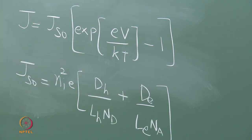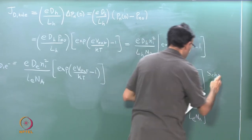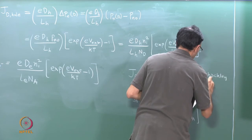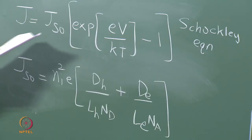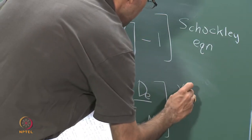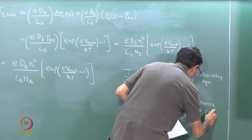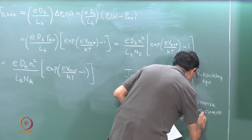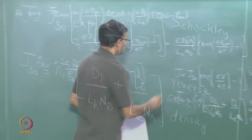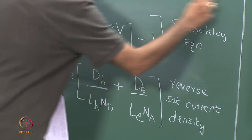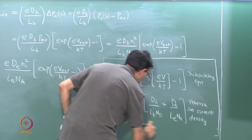This equation is called the Shockley equation. The constant term J_s0 is called the reverse saturation current density, where J_s0 equals n_i squared times e times (D_H over L_H n_d plus D_E over L_E n_a). This represents the total current in a p-n junction in the case of forward bias. The current is due to diffusion of the minority carriers — electrons on the p-side and holes on the n-side — and depends upon the external potential.